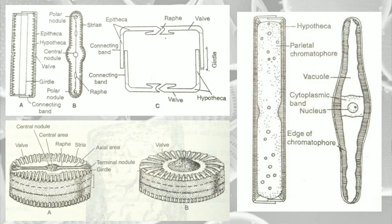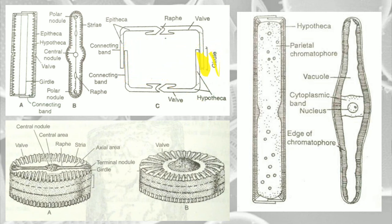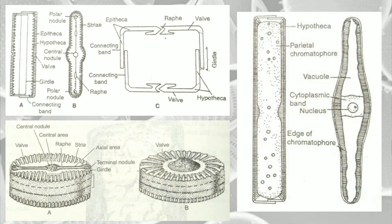Every diatom is made up of two shells: the outer, larger theca is called the epitheca, and the smaller, younger one is called the hypotheca. The valves of both are on the outside, while the connecting band regions of the two thecae overlap each other. The entire overlapping region is called the girdle, which is the growth region of the organism. The girdle view is essentially the side view of the diatom, where the connecting bands are firmly united.